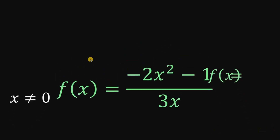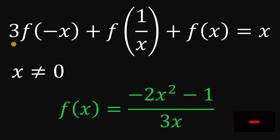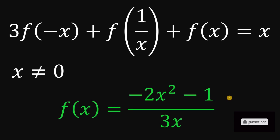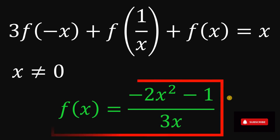Therefore, given the functional equation 3 times f of negative x, plus f of 1 over x, plus f of x equals x, wherein x is not equal to 0, then f of x is equivalent to negative 2x squared minus 1, all over 3x. And as always, we are done.